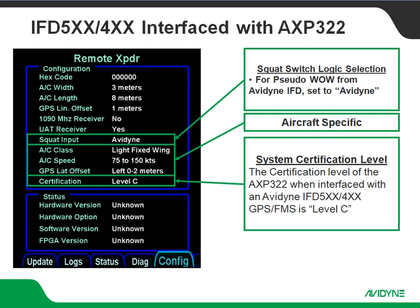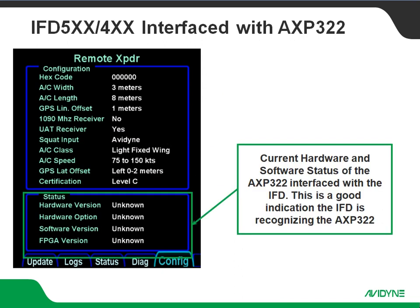Next, we've got settings for aircraft class, aircraft speed, and GPS lateral offset. At the bottom, we've got our certification level. The IFD is certified to level B, but the transponder itself is only certified to level C, so we've got to set this for level C. Also at the bottom, you'll notice hardware version, hardware option, software version, and FPGA version. When these are populated, that's a pretty good indication that the transponder is communicating back to the IFD — it's a quick and easy way to confirm you're getting good communication.